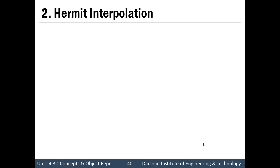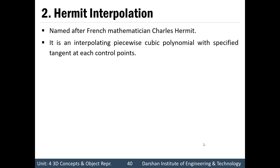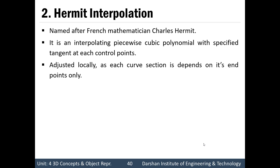The second representation is Hermit Interpolation, named after French mathematician Charles Hermit. It is an interpolating piecewise cubic polynomial with a specified tangent at each control point. Each curve section depends only on its own end points, so it can be adjusted locally. We can modify one part of the curve without affecting other parts, so Hermit interpolation allows local control.